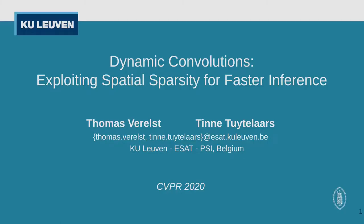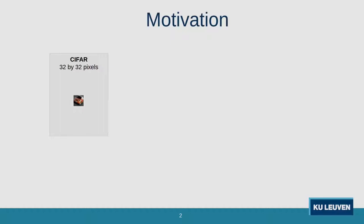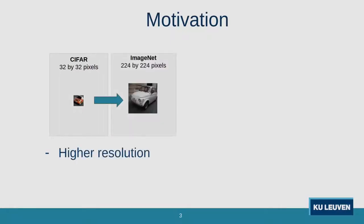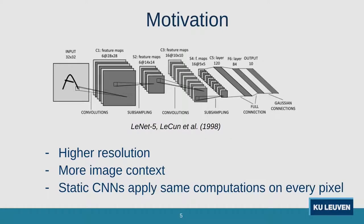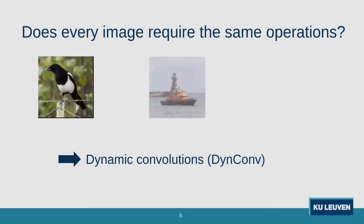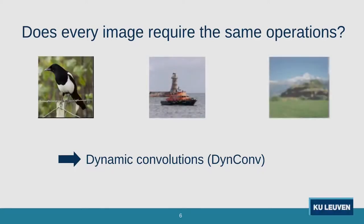Dynamic convolutions is a method to improve the computational efficiency of neural networks. New-domain learning datasets use higher resolution images with more image context. Yet, traditional convolutional neural networks are static and they apply the same operations on every pixel. This seems sub-optimal since many pixels can be considered as background.